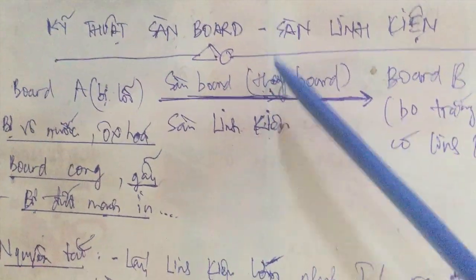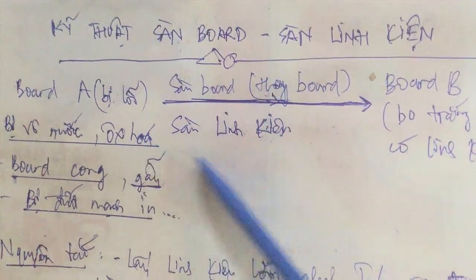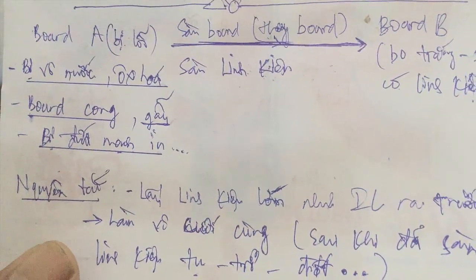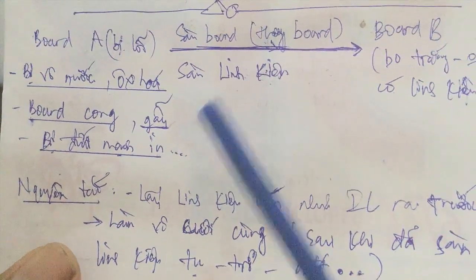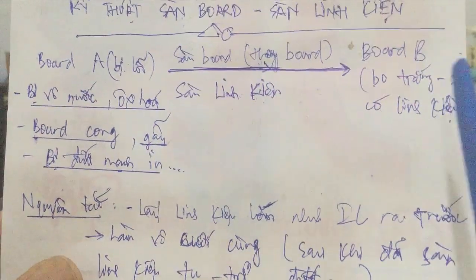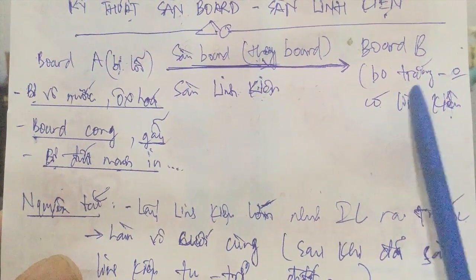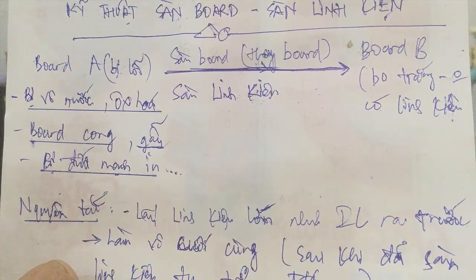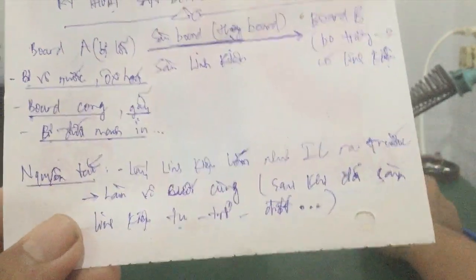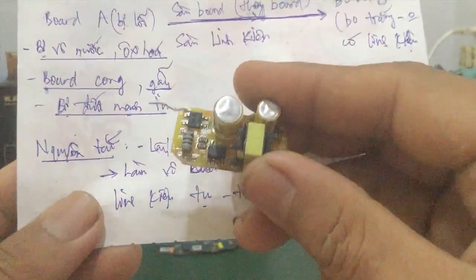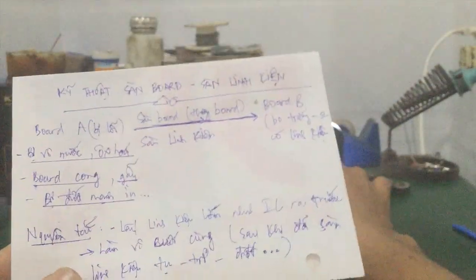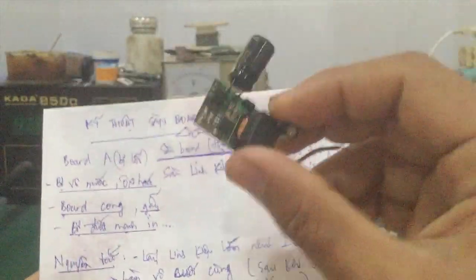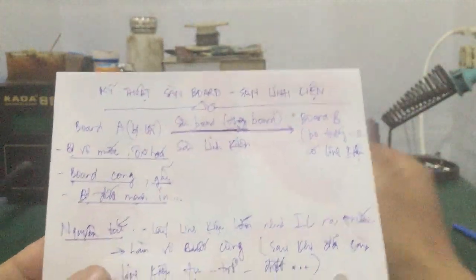Now your Bo A is faulty (bị lỗi). You transfer everything to the good board, Bo B — which is the blank board (bo trắng). Bo trắng means a board with no components at all. For the LED driver circuit board, the components are few and simple, so you can transfer them freely.